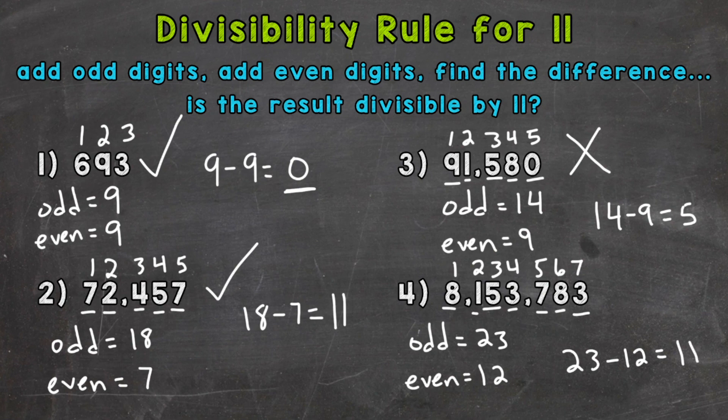So 11 is divisible by 11. Therefore, our original number of 8,153,783 is divisible by 11 as well.